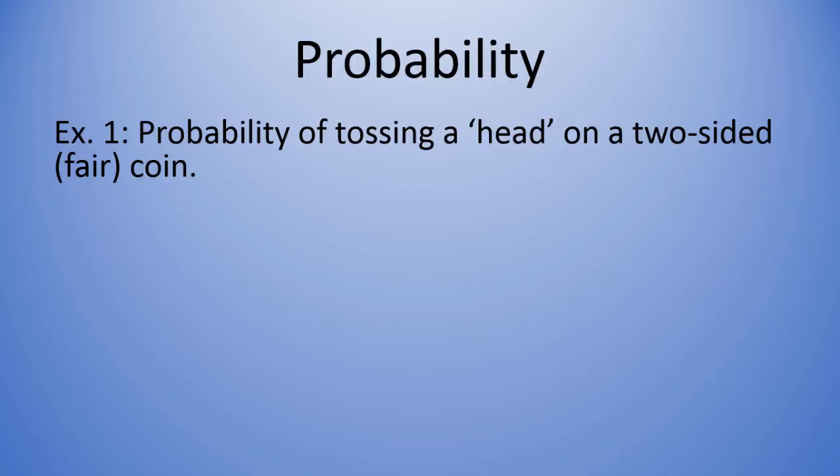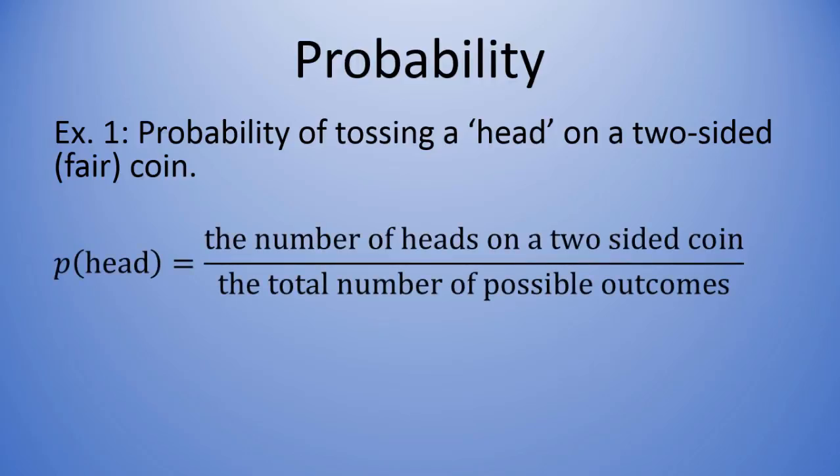So the probability of tossing a head is equal to the number of heads on a two-sided coin over the total number of possible outcomes. Well if you ask yourself how many heads are on a two-sided coin, there's one obviously, right? And the total number of possible outcomes is heads or tails, so there's two outcomes. So the probability of a head is one over two, or if we convert that into a proportion or decimal, it's 0.50.